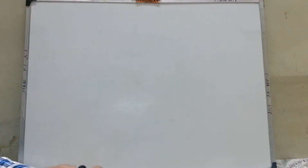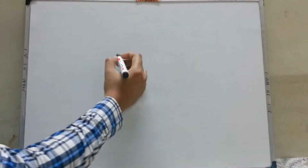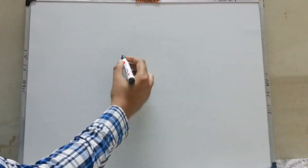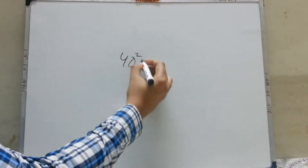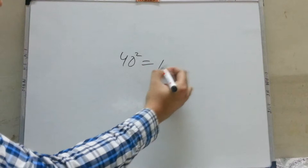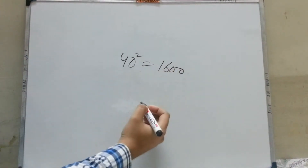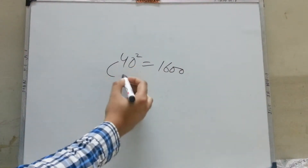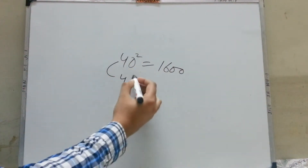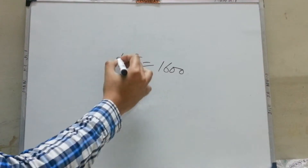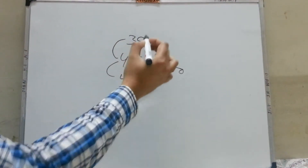Hi friends, today we will learn another method of doing squares. So if you know the square of any digit — for example, the square of 40 is 1600 — you can calculate the square of 41 as well as 39.